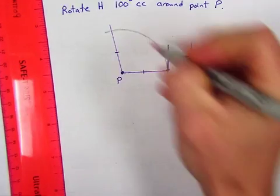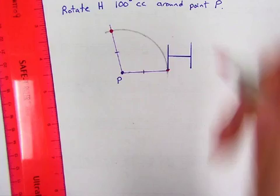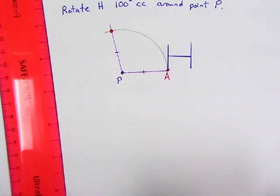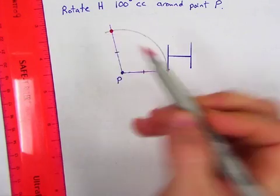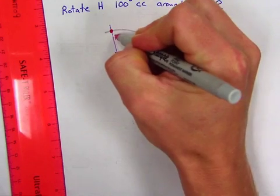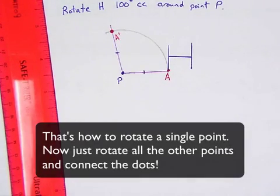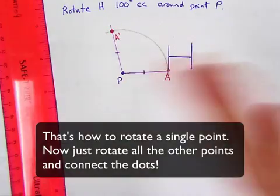So this point rotates over to here. I guess we could label the points so we know what we're talking about. Let's call this point A. That would make this one A prime. And now basically you just follow the same steps for all of the other points.